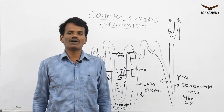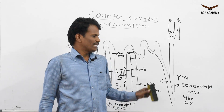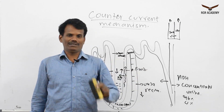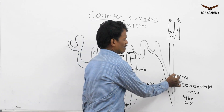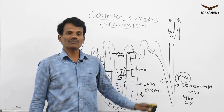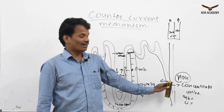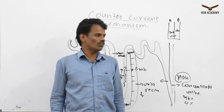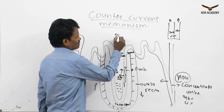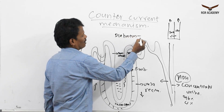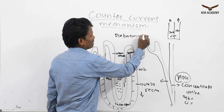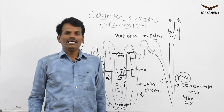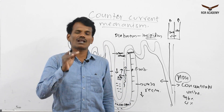If ADH is not secreted, or if excess salts are poured into the blood, the distal convoluted tubule and collecting duct will send out water as such. This will lead to a condition called diabetes insipidus. Diabetes insipidus means an increased amount of water lost through urine.